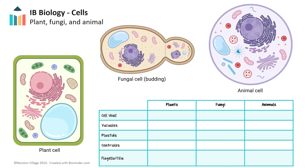Now let's compare the characteristics of eukaryotic cells from the plant, animal, and fungi kingdoms, beginning with the cell wall. All three cell types have a plasma membrane; however, only plant and fungi also have a cell wall, giving the organism a stiff, inflexible structure compared to animals lacking a cell wall. Plants have cell walls composed of cellulose, a carbohydrate made of repeating glucose monomers. Fungi have cell walls composed of chitin, a polysaccharide made of repeating units of modified glucose molecules.